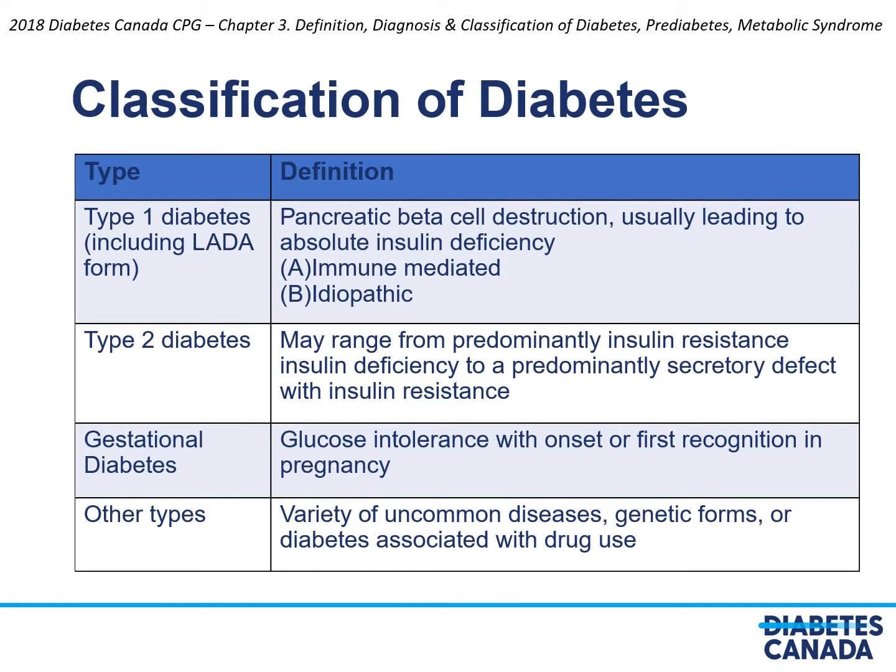There are many types and causes of diabetes. Type 1 diabetes, which includes latent autoimmune diabetes of adulthood, is a pancreatic beta cell destruction that usually leads to absolute insulin deficiency. The cause is most often immune-mediated but there are idiopathic forms as well. Type 2 diabetes, which is the most common cause, ranges from predominantly insulin resistance with relative insulin deficiency to significant insulin deficiency in the setting of insulin resistance. Gestational diabetes is glucose intolerance that onsets or has first recognition during pregnancy and may or may not persist after pregnancy is complete.